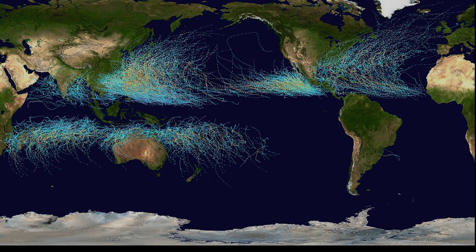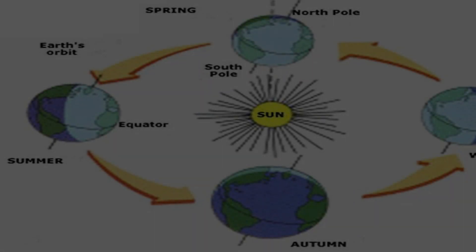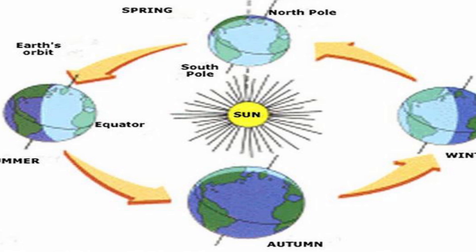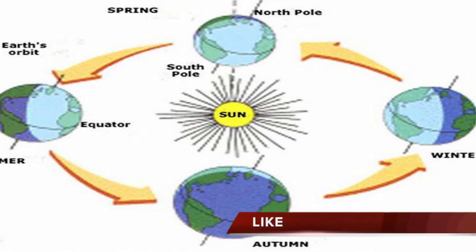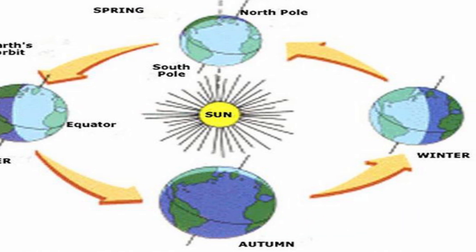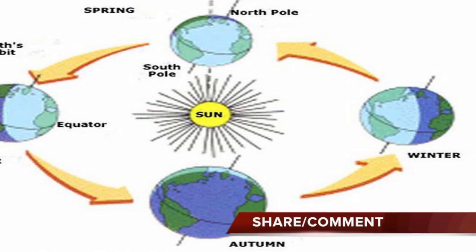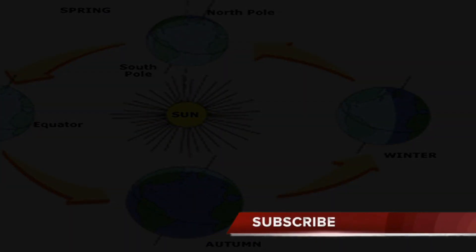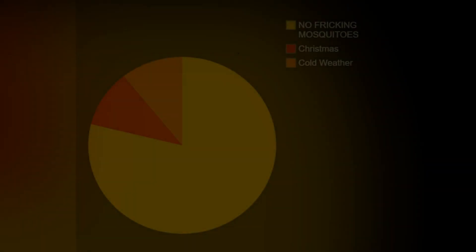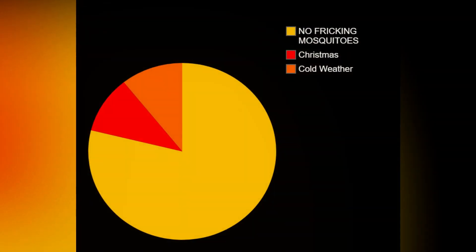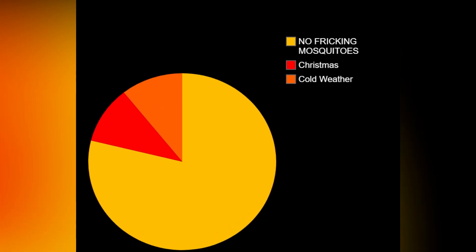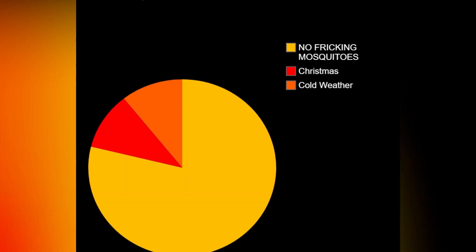In layman's terms, a solstice is a day that occurs due to the sun's changing path. There are generally four seasons that occur on earth: summer, winter, autumn, and spring. Just like the winter and summer solstice are responsible for the arrival of winter and summer seasons, the fall and spring equinoxes are responsible for the arrival of fall and spring seasons. So each year the earth experiences two solstices — summer and winter — and two equinoxes — spring and fall — that help us understand the patterns related to the changing seasons.